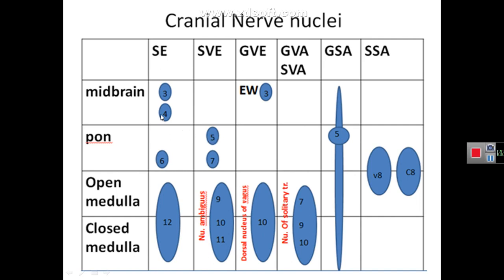Now we will discuss cross-sections in the midbrain. The lower pons contains the abducent nucleus, facial nucleus, spinal nucleus of the trigeminal, and vestibulocochlear nuclei, while the upper pons section shows the main sensory nucleus and motor nucleus of the trigeminal nerve. In the midbrain, there are two sections: the lower midbrain section will show the nucleus of the trochlear nerve (4th cranial nerve), while the upper midbrain section will show the nucleus of the oculomotor nerve (3rd cranial nerve) with the Edinger-Westphal nucleus, and the mesencephalic nucleus of the trigeminal nerve. The trigeminal nerve therefore has three types of nuclei: the mesencephalic nucleus in the midbrain, the main sensory nucleus in the upper pons, and the spinal nucleus extending from the lower pons into the medulla and upper spinal cord.